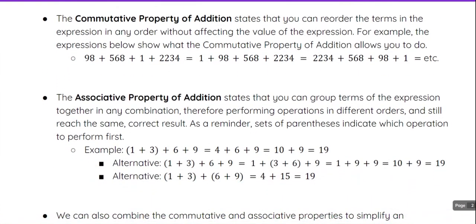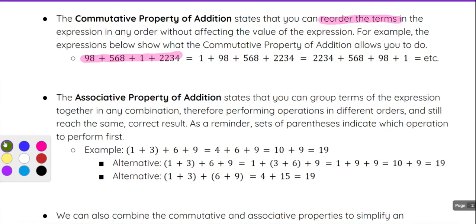With the commutative property of addition, it states that you can reorder the terms in the expression in any order without affecting the value of the expression, and this works anytime you have only addition. For example, 98 plus 568 plus one plus 2,234 can be rewritten in any order, such as one plus 98 plus 568 plus 2,234, or 2,234 plus 568 plus 98 plus one — any order will give the same answer.